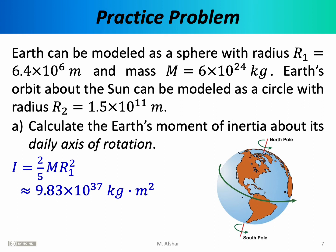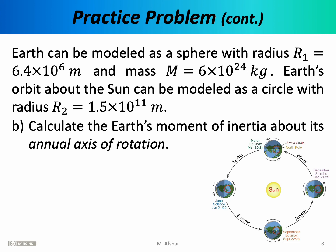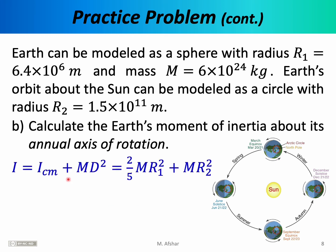The Earth also has a second axis of rotation. The Earth is rotating about the Sun, so we can imagine a second axis of rotation passing through the Sun with the Earth orbiting it. Part B asks us to calculate the Earth's moment of inertia about its annual axis of rotation. The daily axis passes through the center of mass of the Earth, but the annual axis passes through the Sun and is approximately parallel to the daily axis. Therefore, to calculate the new moment of inertia we need to use the parallel axis theorem.